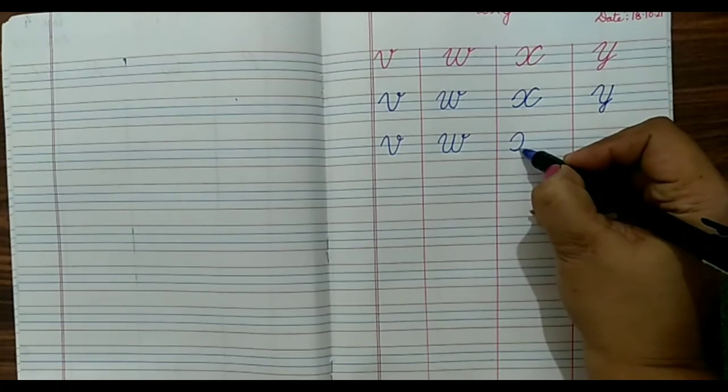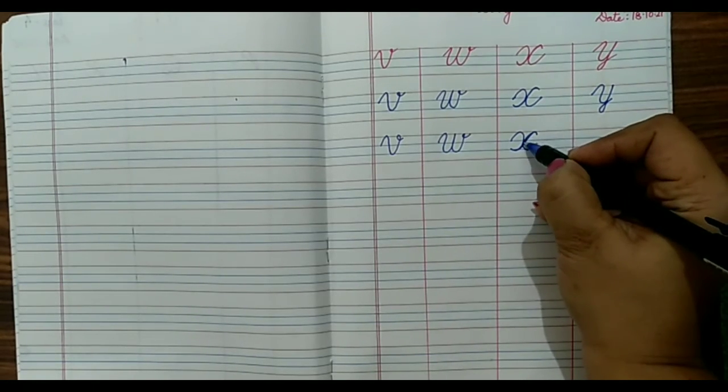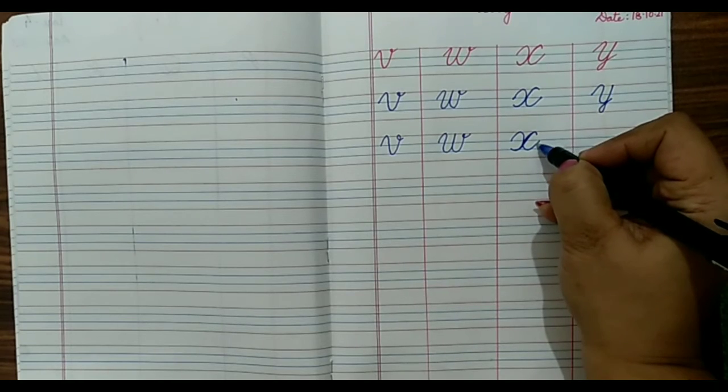For X, we will start from the first blue line and reverse C, then reverse C, then forward C and then touch the blue line again.